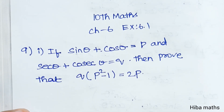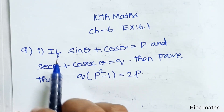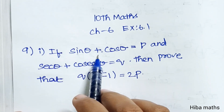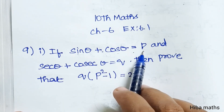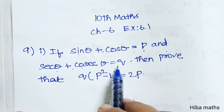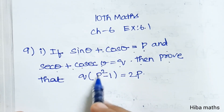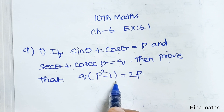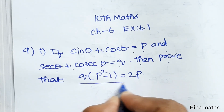Hello students. 10th Standard Maths, Chapter 6, Exercise 6.2, 9th question, first subdivision. If sin θ + cos θ is equal to P and sec θ + cosec θ is equal to Q, then prove that Q(P² − 1) = 2P. This is the proof.